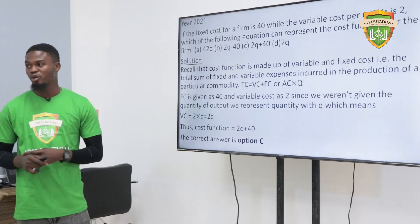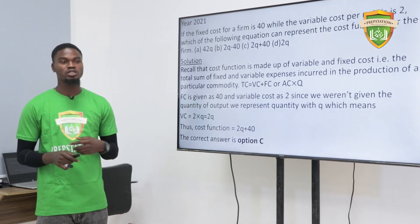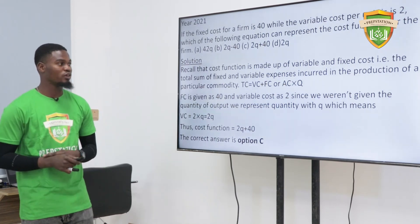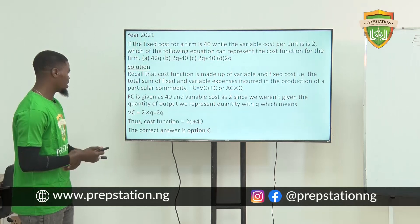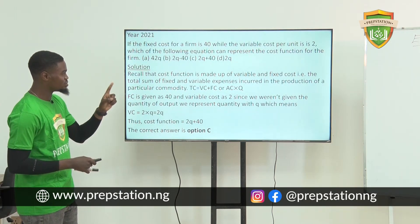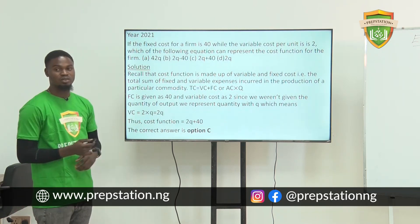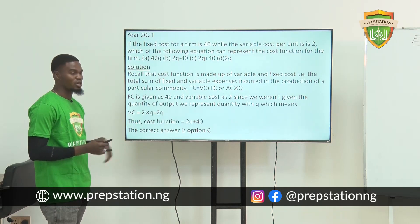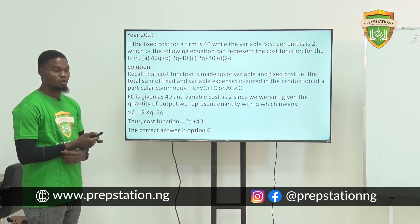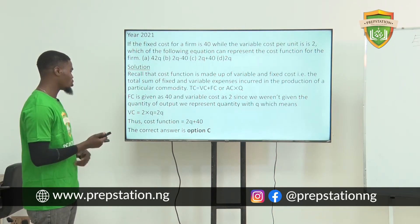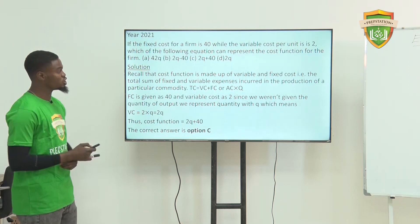We know that the cost function is made up of the total cost, and total cost equals variable cost plus fixed cost. We are given FC as 40 and variable cost per unit as 2. We represent quantity by q and multiply q by 2 to get the variable cost, giving us 2q. Then we add the fixed cost: 2q plus 40 gives our cost function. The appropriate answer is option C, which is 2k plus 40.